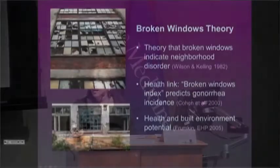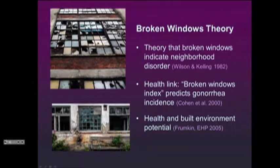There's an interesting theory called the broken windows theory, which emerged from criminology about 35 years ago from Wilson and Kelling. It holds that broken windows indicate neighborhood disorder, and higher rates of crime are consistently associated with broken windows. This theory has been adopted in health. A study by Deborah Cohn in New Orleans found that gonorrhea rates in micro-neighborhoods were associated with a broken windows index. Howard Frumpkin has also suggested that the built environment and broken windows concept is a good analogy showing that neighborhoods can be conducive to — or not conducive to — health improvement.